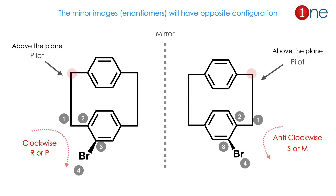As with any other chirality, the mirror image always has the opposite configuration — if one is P, the other is M, or if one is R the other is S. In the example shown, the bromine atom in both mirror-image compounds reflects exactly. Evaluating each gives one clockwise and one anti-clockwise. Mirror images always have opposite configurations, just like normal CIP rules.